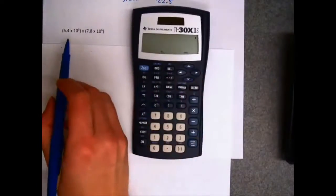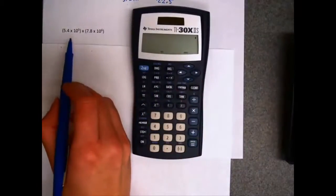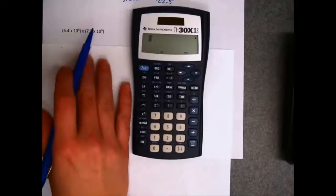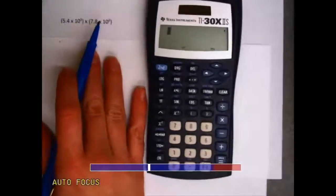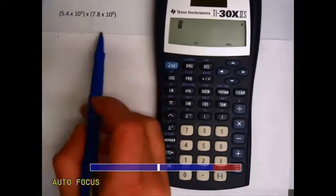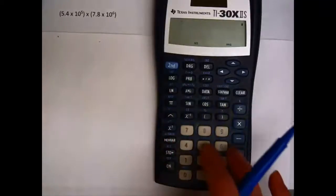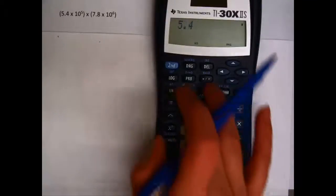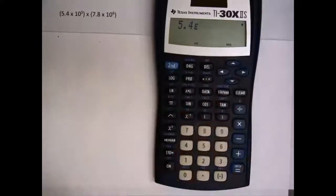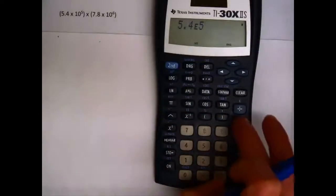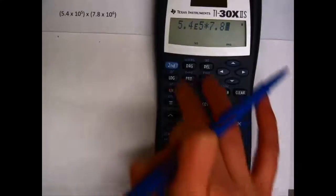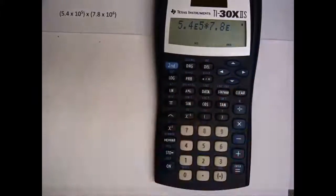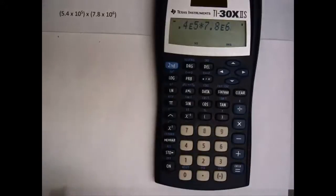Okay, let's practice using our scientific notation. They want us to take here 5.4 times 10 to the 5th, times 7.8 times 10 to the 6th. So I'll enter 5.4, hit my second EE button, and say I have an exponent of 5, times 7.8, hit my second EE button, tell it I have an exponent of 6.